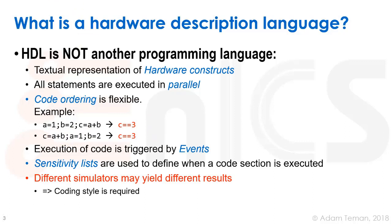Execution of code is triggered by what we call events. Every time something happens or changes, an event is triggered, and then the simulator — which tries to show us if our code is behaving as planned — figures out what happened exactly at that event. Most simulators are event-driven simulators, and they are triggered by events.